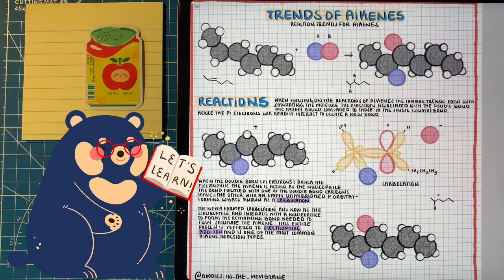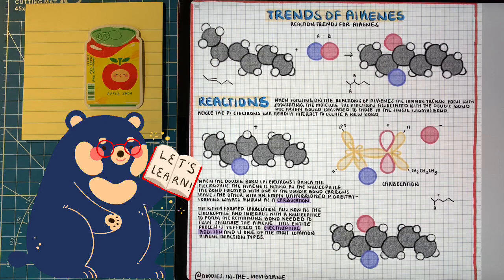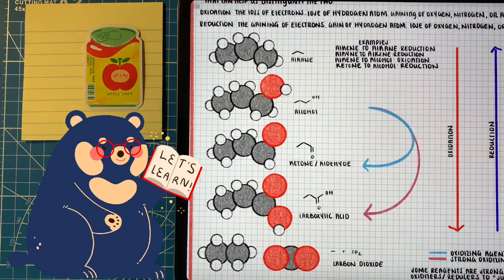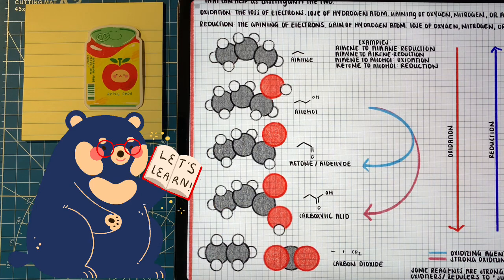Now moving forward in the next video, I want to start talking about oxidation and reduction reactions. So in the next video, we're going to explore different reactions that incorporate oxidation and reduction with alkenes to form a product. So I hope this video was helpful to talk about electrophilic addition.